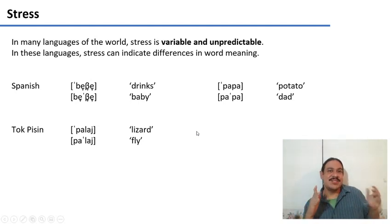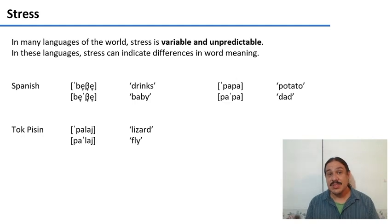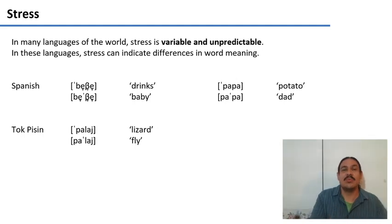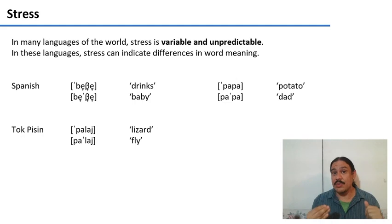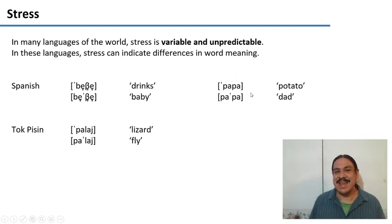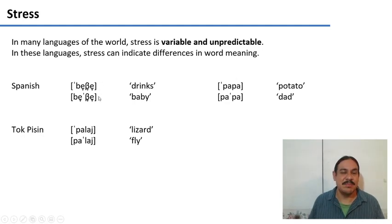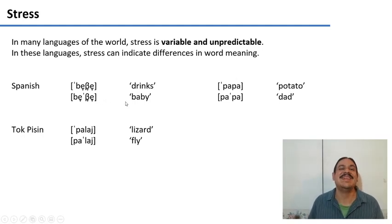Some languages have fixed stress. In other languages, stress is variable and in fact unpredictable — you have to learn it when you learn the word. This is true for Russian, and for Spanish, where a difference in stress changes the meaning but there's no systematic way to predict it. For example, 'papa' (potato) versus 'papá' (dad); 'bebe' (drinks) versus 'bebé' (baby). Some have stress on the first syllable, others on the second — you just have to learn it.